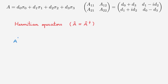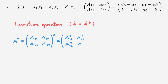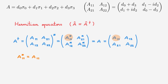Let's write down the adjoint of the matrix A. Explicitly, it's given by calculating the transpose of A and then evaluating its complex conjugate, which reduces to these matrix elements. For a Hermitian matrix, this must be equal to the original matrix A. Comparing the diagonal terms, we see that the complex conjugate of A11 equals A11, and the complex conjugate of A22 equals A22. These imply that for a Hermitian matrix, the diagonal elements must be real numbers.